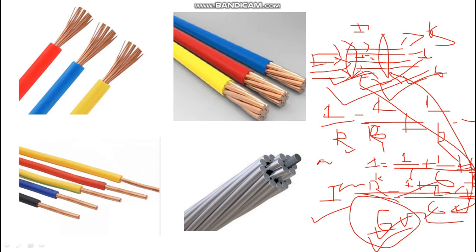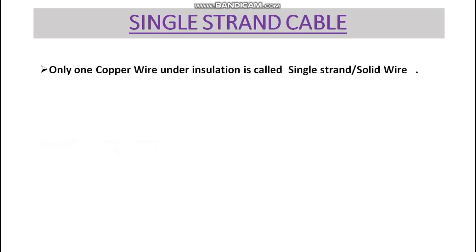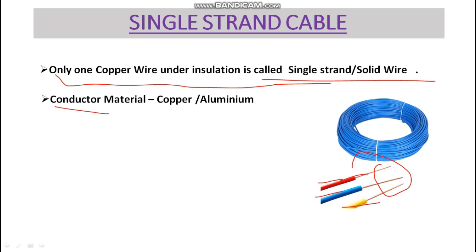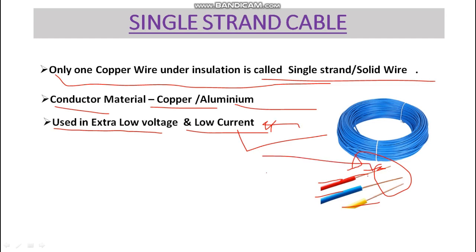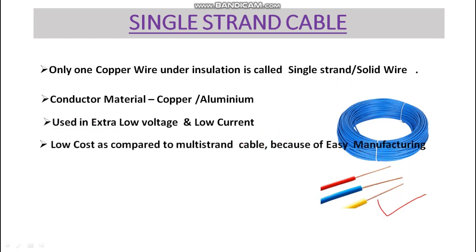Now, single-strand cable: only one copper wire under the insulation is called single-strand or solid wire. As you can see here, this is the single strand with insulation over it. The conductor can be copper or aluminum, and it is used in extra-low voltage and low current applications, because it cannot carry more current due to high resistance and the skin effect.